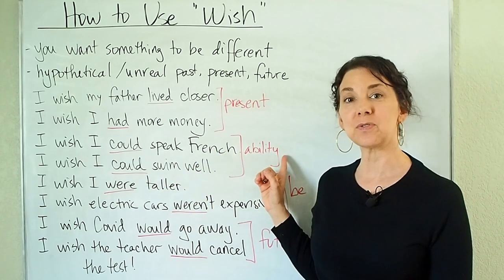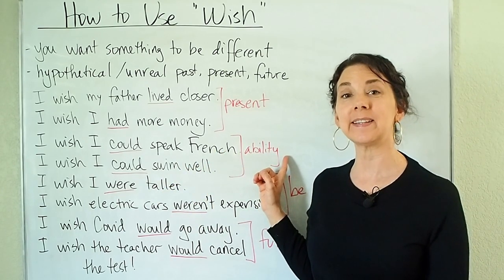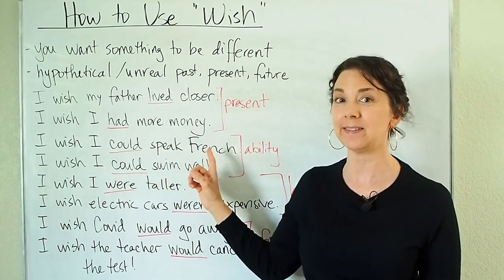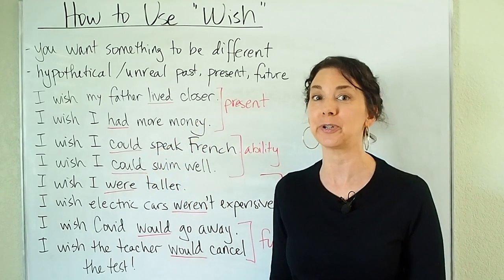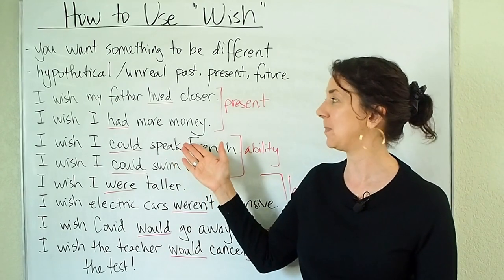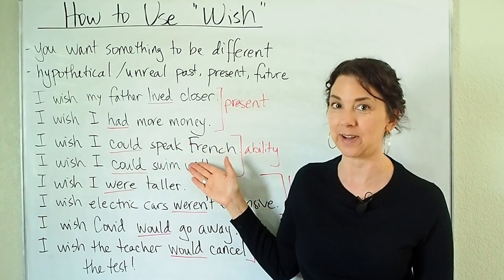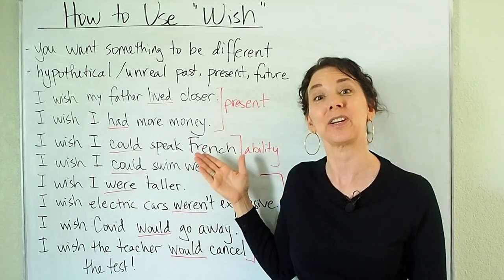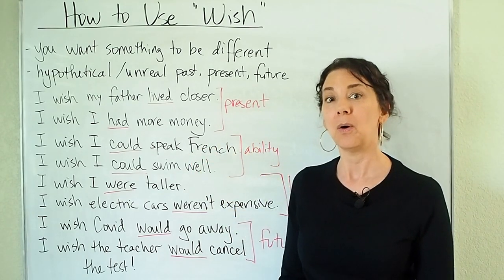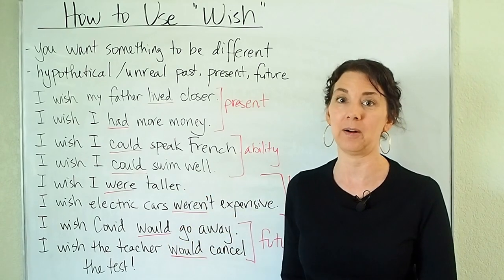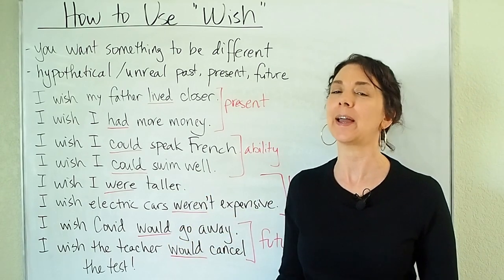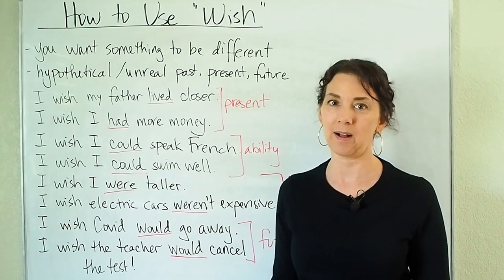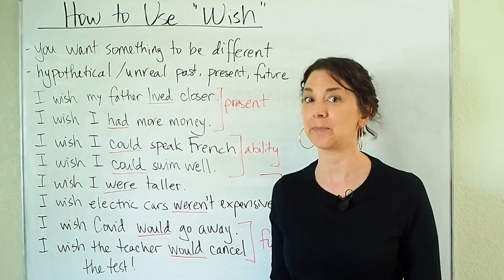Now let's talk about how you can use wish for ability. Instead of using the verb can, we have to use the past tense form, so we're going to use the verb could. I wish I could speak French — I cannot speak French, but in my mind I wish it were different. I wish I could speak French. Or: I wish I could swim well. I'm not a good swimmer, but I wish that I could swim well. It's my wish for something different.